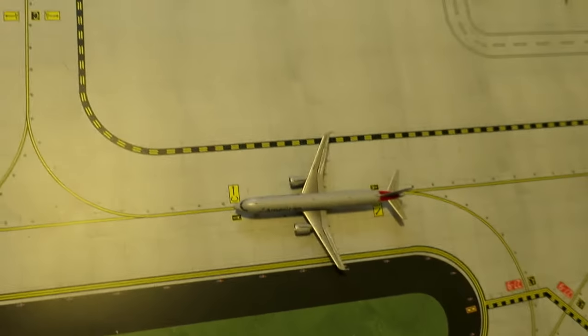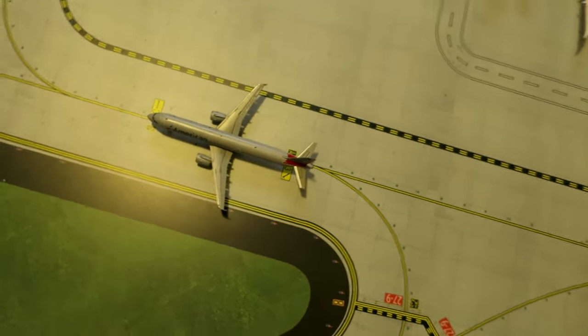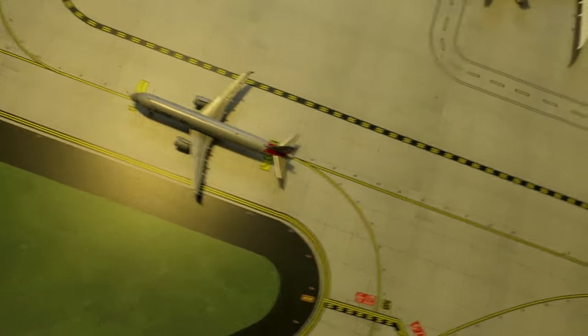Next up here, we've got American Airlines Airbus A321. It had arrived from Toronto and will depart to Boston.